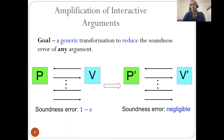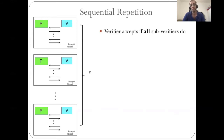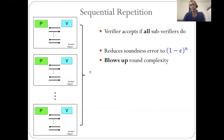The most natural way of doing such generic amplification is by repetition. If we repeat the execution many times and the prover succeeds in all executions, this will be harder. The first option is sequential repetition: repeat the execution N times sequentially, one after the other, with independent coins, and the verifier accepts only if it accepts in each execution. This automatically reduces the soundness error to the power of N, but the problem is that it blows up the round complexity — the number of interaction rounds is N times more.